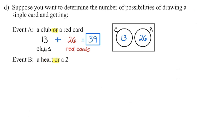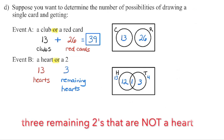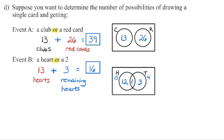For Event B — drawing a heart or a 2 — we notice this is different. Is it possible for a card to be both a heart and a 2? Yes, it is. So when we diagram this, we have intersecting circles. There are 13 hearts and four 2s, but one of those 2s is a heart, meaning three of the 2s are not hearts. That 2 of hearts is already in the heart circle, leaving 12 hearts that are not a 2. Adding 12 plus 1 plus 3 equals 16 — so there are 16 possibilities for Event B.